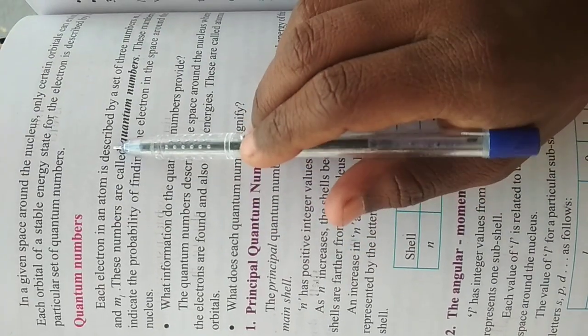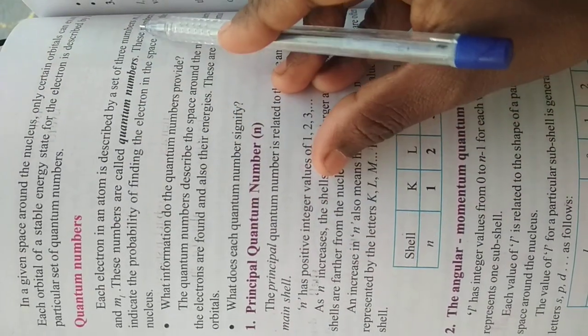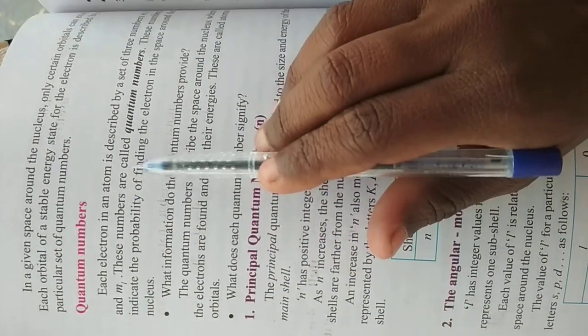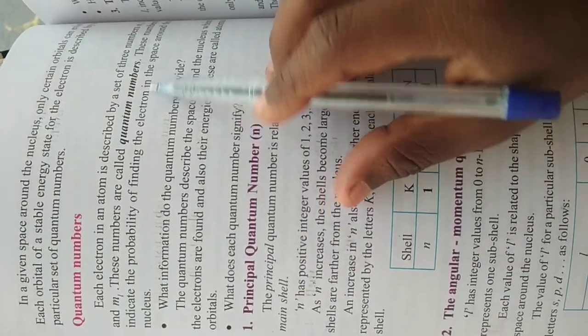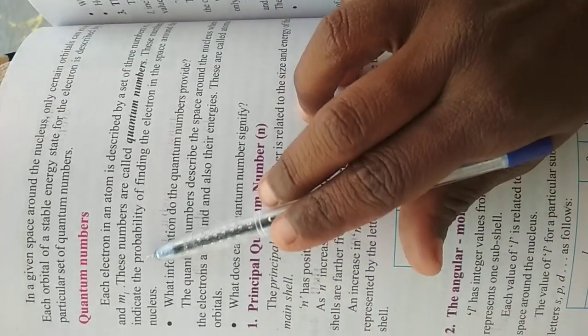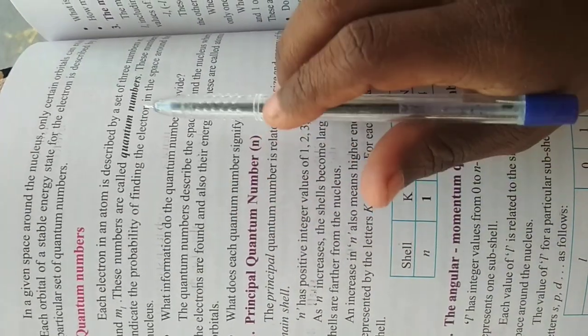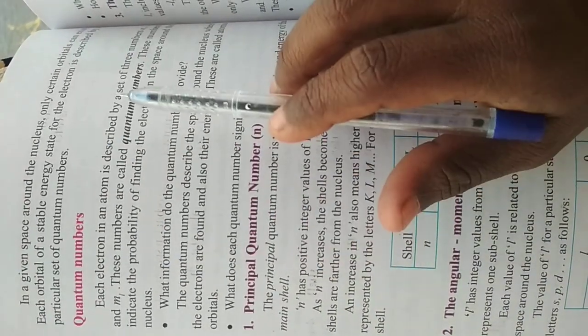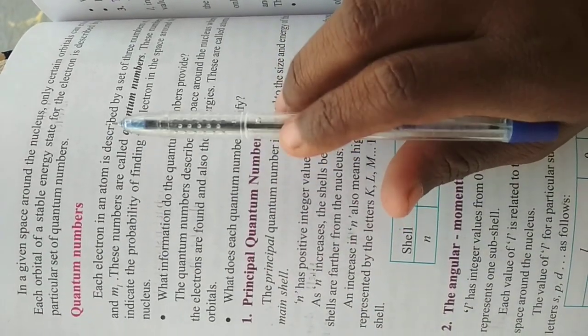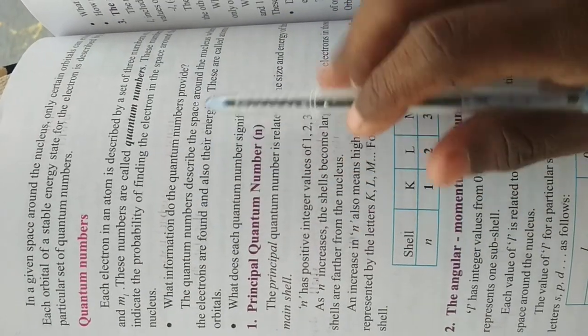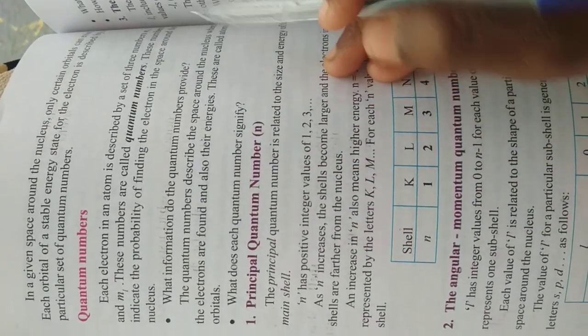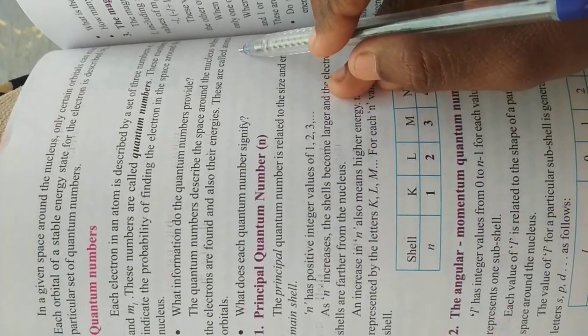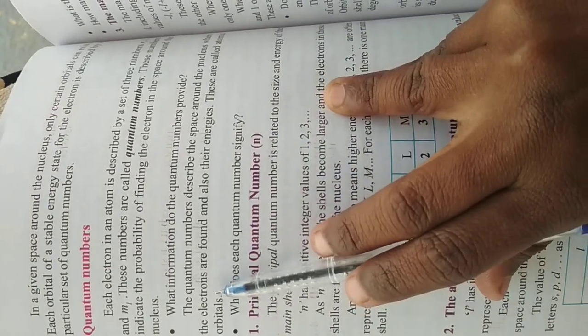Each electron in an atom is described by a set of three numbers: n, l, and m_l. These numbers are called quantum numbers. These numbers indicate the probability of finding the electron in the space around the nucleus. This will indicate where the electron is present. The quantum numbers describe the space around the nucleus where the electrons are found and also their energies. These are called atomic orbitals.